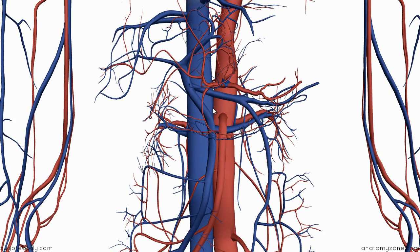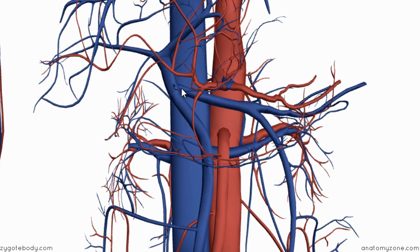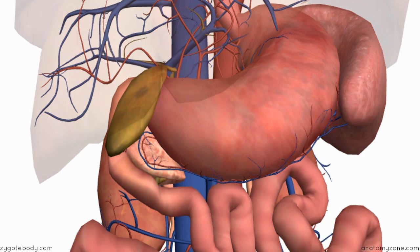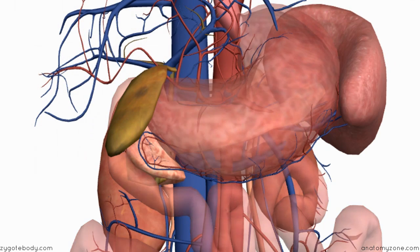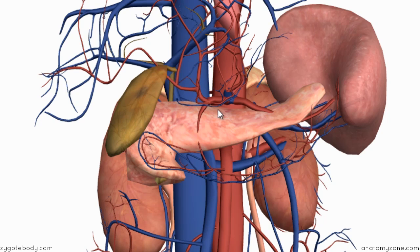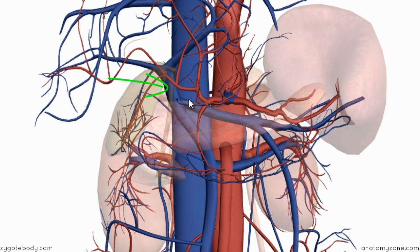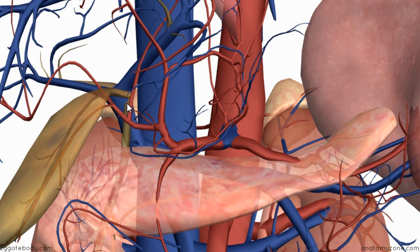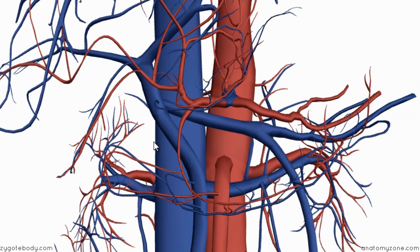There are a few main tributaries which lead to the portal vein. You can see this branch coming off here which drains into the portal vein — this is the splenic vein. To orientate you with regard to the other structures in this area, if I bring in the other viscera, you can see where the splenic vein and hepatic portal vein lie. Fading away the stomach, you can see the pancreas underneath, and the splenic vein lies underneath the pancreas, running along the length of the pancreas on its posterior surface. You can also see the bile duct in front of the portal vein.